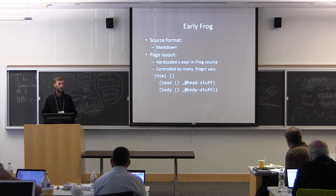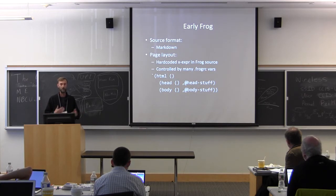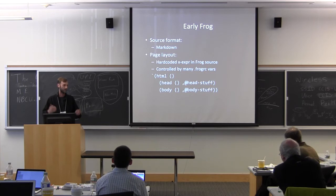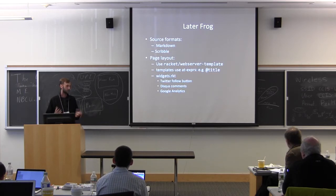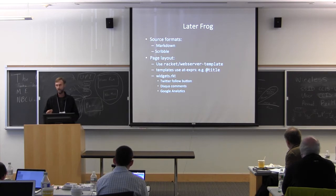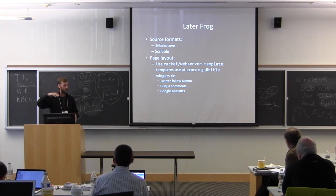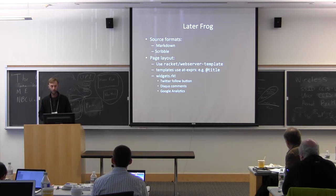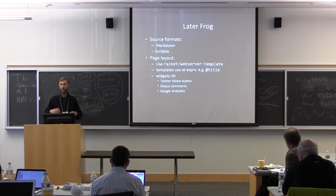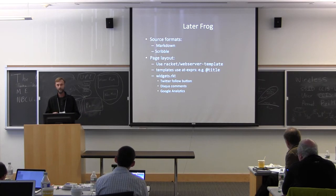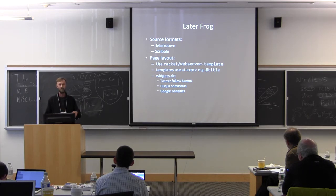In the early version of Frog, the only source format was Markdown, and the page layout was a hard-coded X expression in Frog itself — you could control its behavior a little bit with a few configuration variables. After a few months I made a couple of changes: I added support for Scribble format, and now the page layout uses Racket web server templates. You can write what looks like a normal HTML file, but within it there can be at-expressions referencing variables evaluated in the template environment. Also automatically included is a little library of functions to add a Twitter follow button, a Google Plus One button, Disqus comments, and so on.